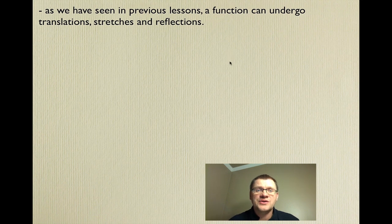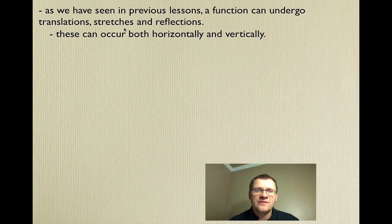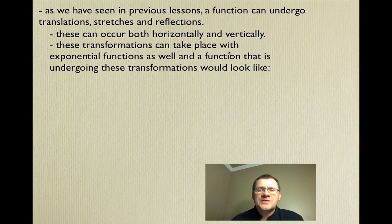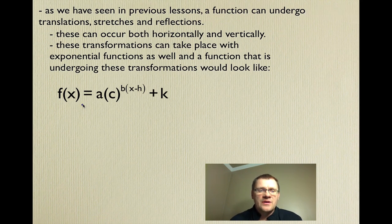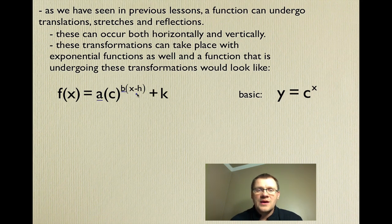As we've seen in previous lessons, a function can undergo translations, stretches, and reflections, and these can occur both horizontally and vertically. These transformations can take place with exponential functions as well. A function undergoing these transformations looks like this: f(x) = a · c^(bx - h) + k. Our basic function was y = c^x.